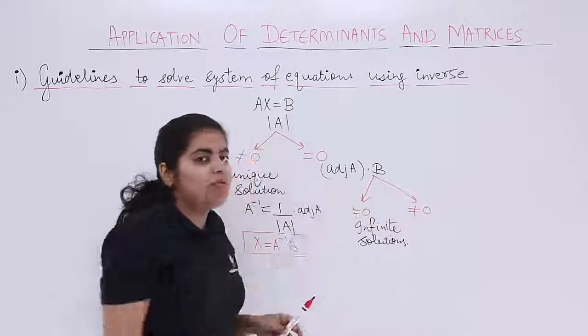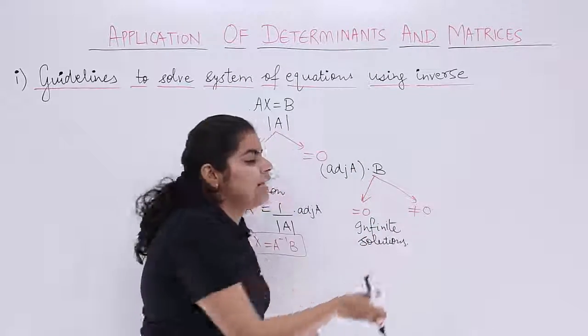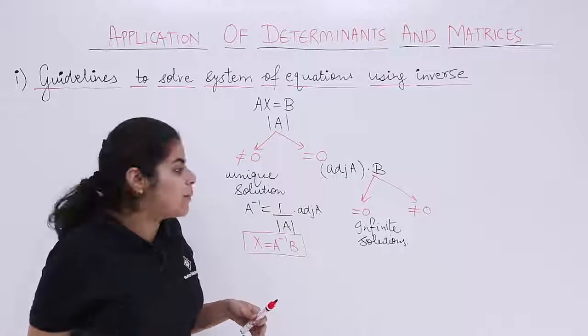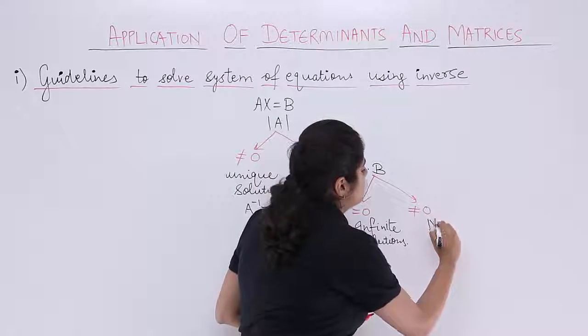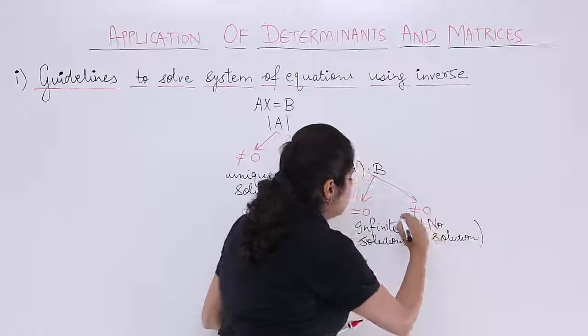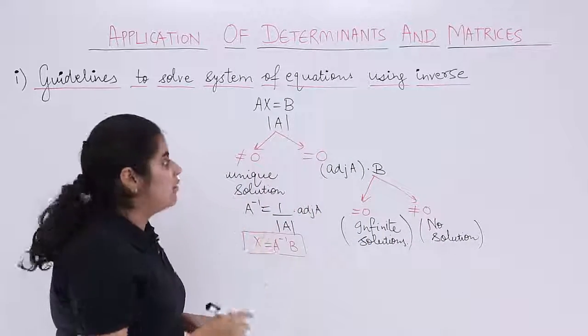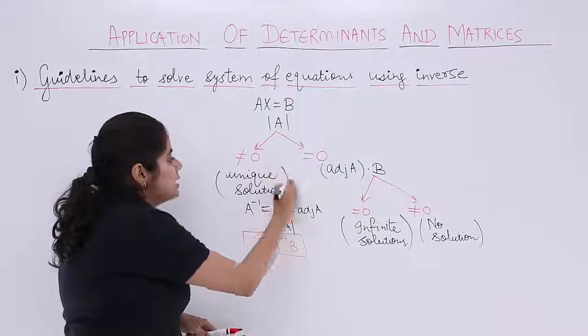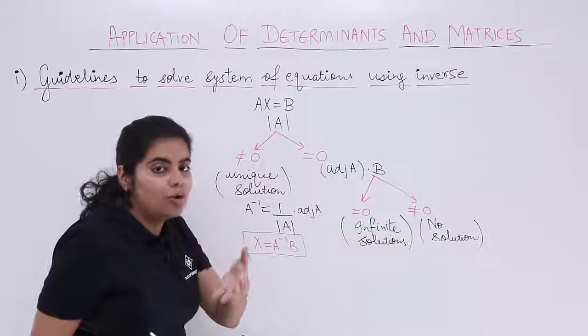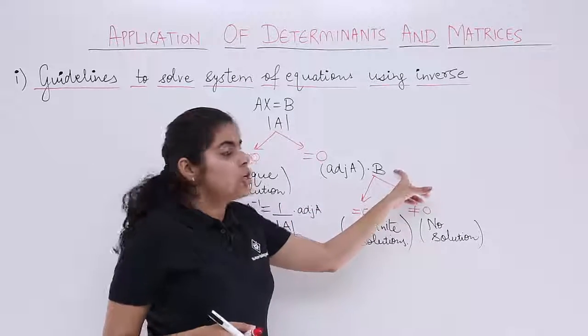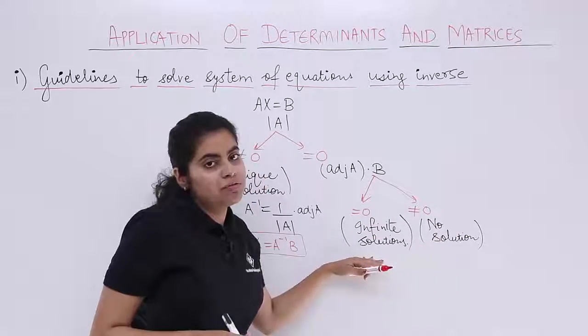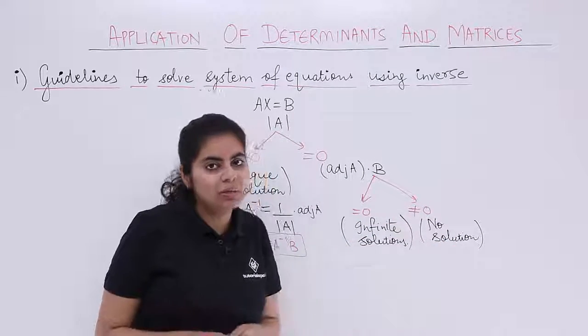But if det A was 0 but adjoint A into B is not 0, then what happens is you get no solution to the given system of equations. So having determinant value as 0 cannot decide what is the solution, how many solutions, until and unless you solve adjoint A into B. And then yes, if infinite solution or no solution, that will be decided upon.